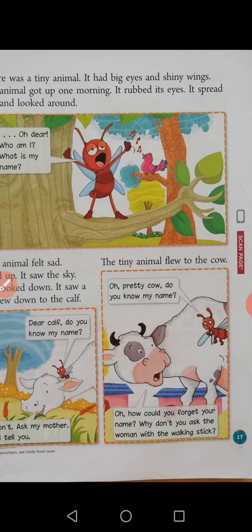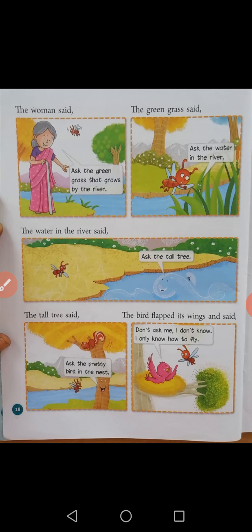The tiny animal flew to the cow. 'Oh pretty cow, do you know my name?' 'Oh, how could you forget your name? Why don't you ask the woman with the walking stick?' The woman said: 'Ask the green grass that grows by the river.' The green grass said: 'Ask the water in the river.' The water said: 'Ask the tall tree.' The tall tree said: 'Ask the pretty bird in the nest.' The bird flapped its wings and said: 'Don't ask me, I don't know — I only know how to fly.'